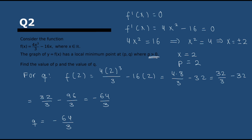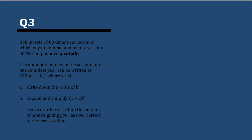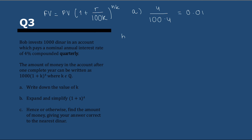Next question — Question 3. Bob invests 1,000 dinar in an account which pays a nominal annual interest rate of 4% compounded quarterly. I'm going to put the formula here for the final value. Careful though — in this formula there is a k, but this is not the same k as the one in the question. The k they're asking for is r over 100k, which is 4 over 100 times 4 — 4 periods because it's quarterly. So that k is 0.01.